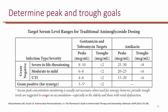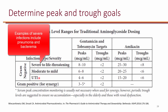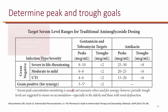The PKPD targets for aminoglycosides are peak-to-MIC ratios and AUC-to-MIC ratios. For simplicity, we are only going to look at peak-to-MIC ratios in this class. The target peak for severe infections is 8 to 10, for moderate to mild infections is 6 to 8, for urinary tract infections is 4 to 6, and if you use aminoglycosides for synergy in gram-positive organisms, the peak will be 3 to 5. The peak-to-MIC ratio tells you efficacy. We also target trough for safety — we want the trough to be less than 2 for all of these, to minimize the risk of nephrotoxicity and ototoxicity.